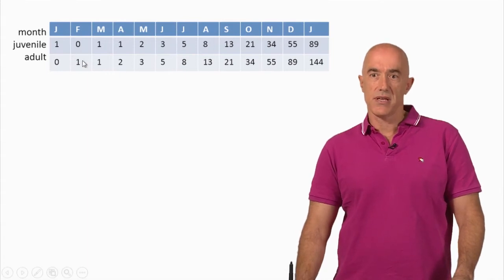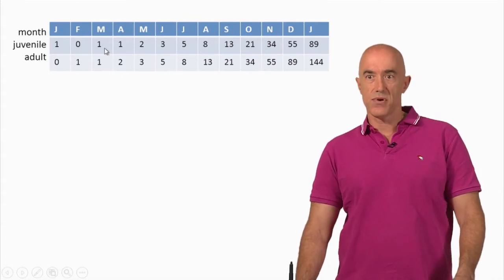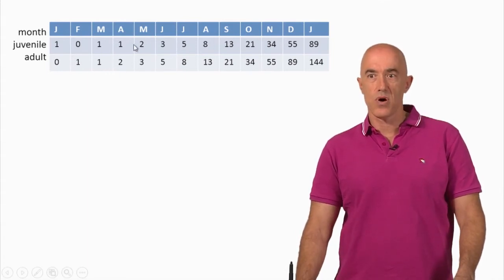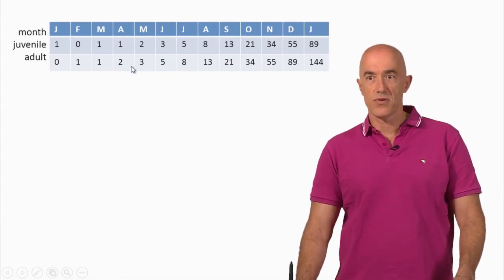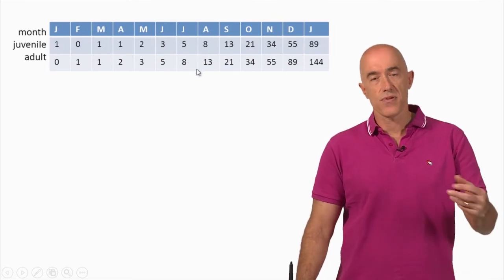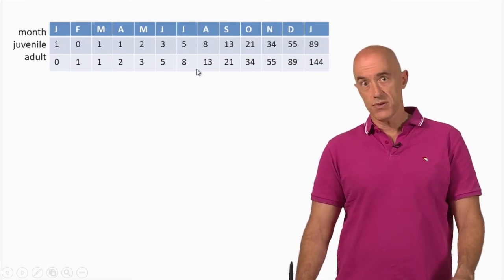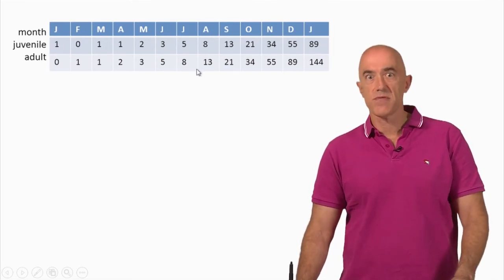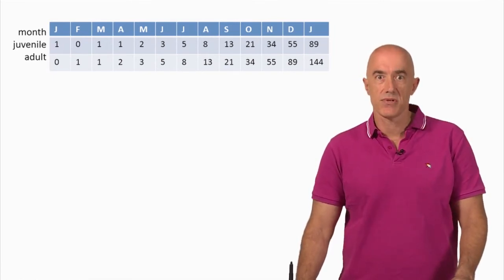If you look at the numbers, you see 1, 1, 2, 3, 5, 8 in both rows. So we have the Fibonacci numbers there.